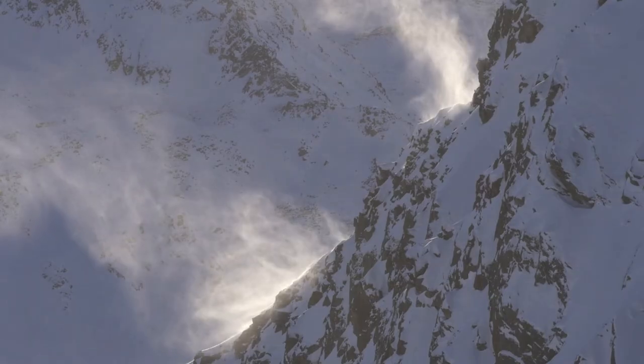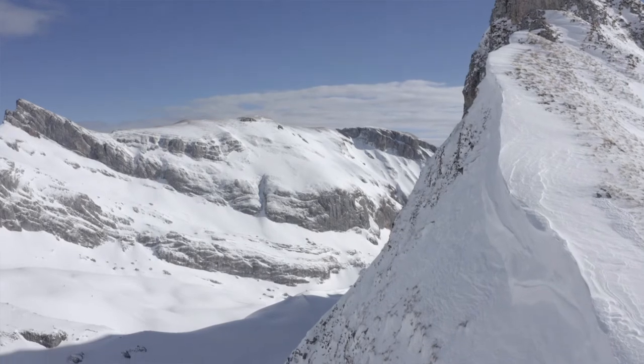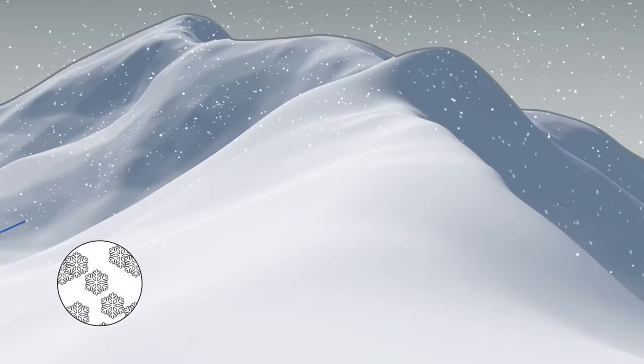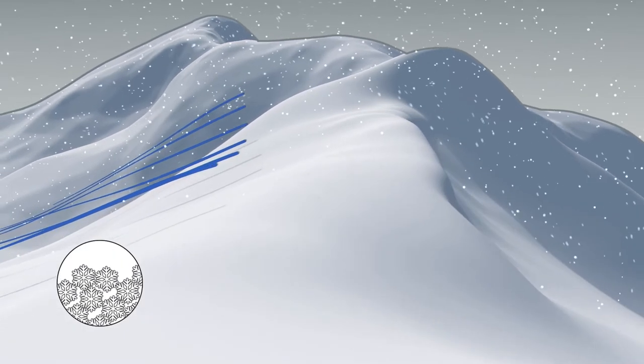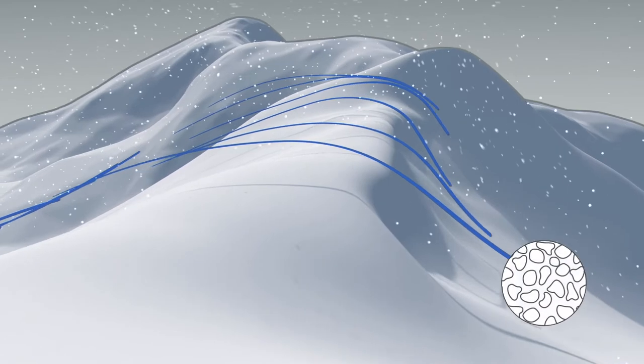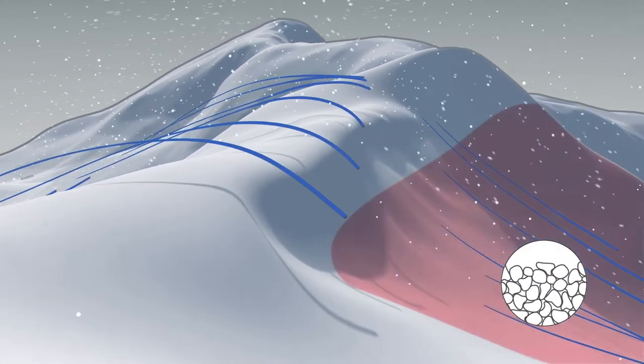Wind signs that hint at where wind-drifted snow is located include, for example, Sastrugi — structured surfaces with peaks pointing toward the direction the wind is coming from — as well as cornices, snow banners on ridges, and wind-scoured ridges. In the areas where the wind meets the snow, it takes the snow crystals with it, mechanically breaks them down, and deposits them in sheltered leeward areas, forming this dangerous wind-drifted snow.